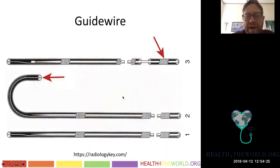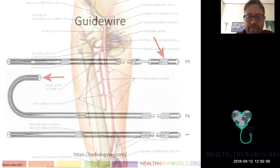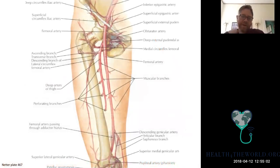We use wires that have a safety wire with a central core mandrel, and a spun wire around it — that's the safety wire welded to the mandrel. Most wires in angiography are not a single filament; they're at least two filaments welded together.